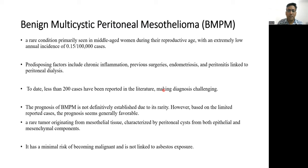A few words about benign multicystic peritoneal mesothelioma: it is a very rare condition primarily seen in middle-aged women during their reproductive age, with an extremely low annual incidence of 0.15 per lakh cases. Predisposing factors include chronic inflammation, previous surgeries, endometriosis, and peritonitis linked to peritoneal dialysis. To date, less than 200 cases have been reported in the literature, making diagnosis challenging.